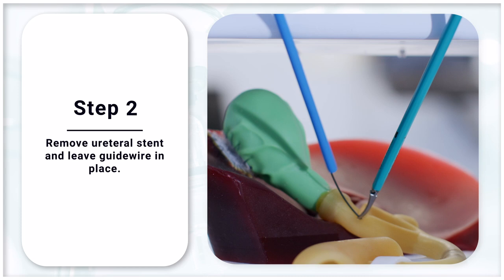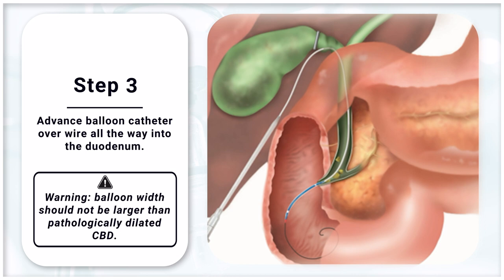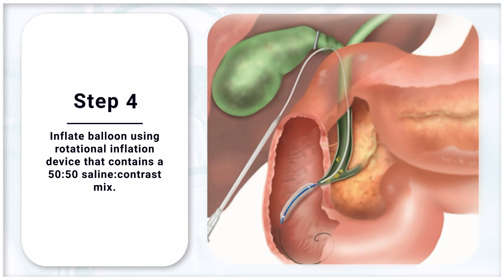Step 3: Advance the balloon catheter over the wire all the way into the duodenum. Step 4: Inflate the balloon using a rotational inflation device that contains a 50-50 saline contrast mix.